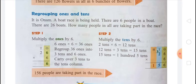It is Pudum — Pudum means a festival. A boat race is being held. There are 6 people in one boat and there are 26 boats. How many people in all are taking part in the race? You have to multiply 26 by 6.